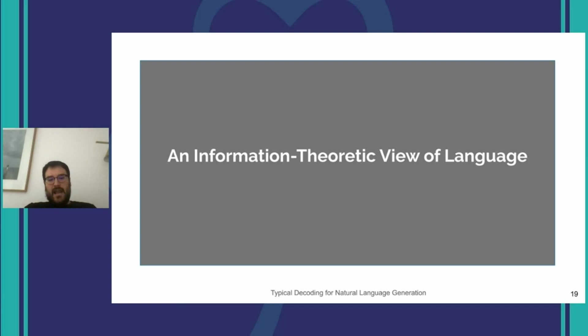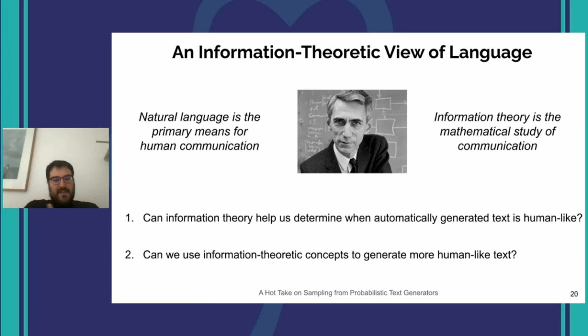Now I'm going to change directions slightly and talk about an information-theoretic view of language. The roadmap is: I'll talk about information theory for about five minutes, then show how principles from information theory can be used to design an even better decoding strategy. Natural language is the primary means of human communication — in fact, I'm communicating with you here through human language. Information theory is the mathematical study of communication, so it seems logical that it should have something to say about natural language.